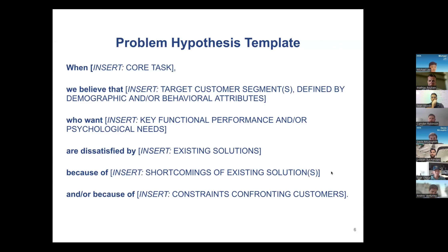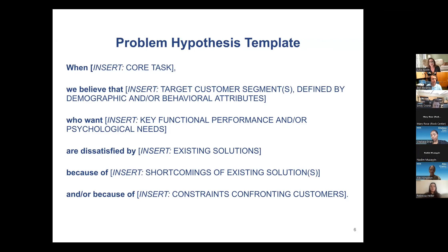Some of you are familiar with this template from toolkit or the Rock Accelerator. It's a basic, standard template — not my invention. It helps us define problems with hypotheses about who we think is suffering from the problem and why. It's a simple statement: when this happens, we believe that this particular segment or customer with certain behavioral attributes has a certain pain point or need. They're not happy with whatever's out there today, or maybe there's nothing out there today, because of the following reasons.